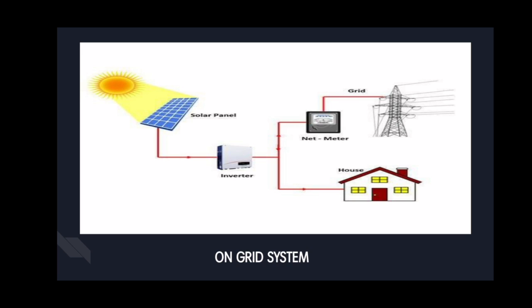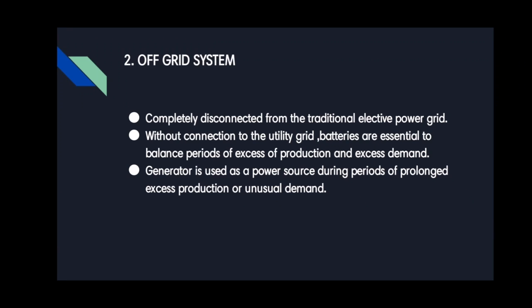When the system is not producing sufficient power, the home can draw power from the grid. The on-grid system does not work during power outages, so it can be installed in minimum power cut areas. It is easy to install, cost effective, and can save on the electricity bill up to 3 to 8 years.